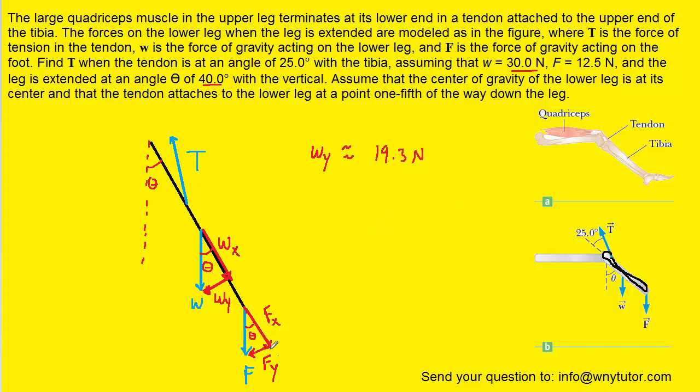Now similarly, we can see that the y component of the foot force is opposite to the angle theta as well. So we can write f sub y is equal to the foot force multiplied by the sine of the angle. Now the foot force was given as 12.5 newtons. And again, we know the angle is 40 degrees. So we can go ahead and calculate the y component of the foot force. And it turns out to be roughly 8.03 newtons.